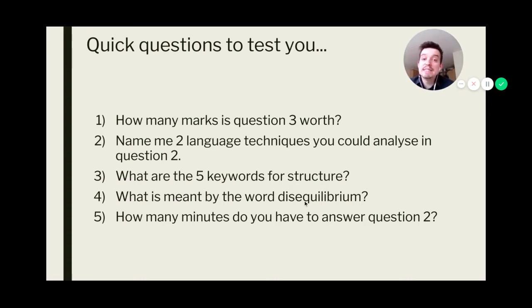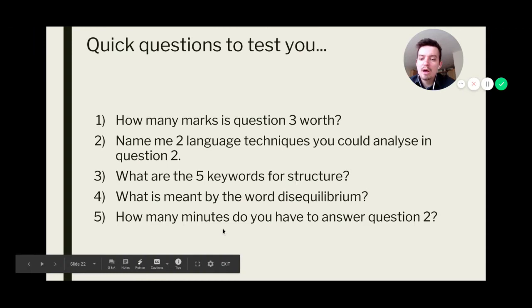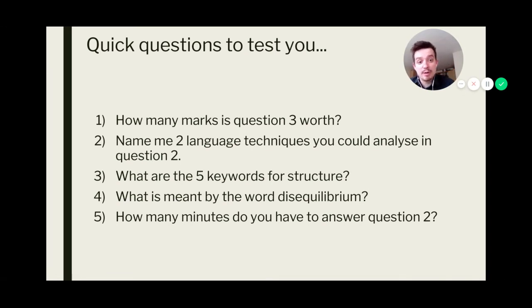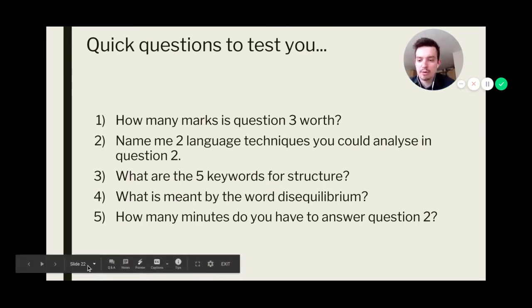Question 4. What is meant by the word disequilibrium? That is when something in a story starts to go wrong. Now, you will find with the extracts that often things will start well at an equilibrium but then they will shift to a disequilibrium. A problem will occur and that's a great word to be able to use for question 3 as well. Finally, how many minutes do you have to answer question 2? You have 12 minutes. So, remember there's lots to be able to do but we've got to make sure we do it within the time. Mark these, make sure that you've corrected any mistakes but well done if you got all of them correct.